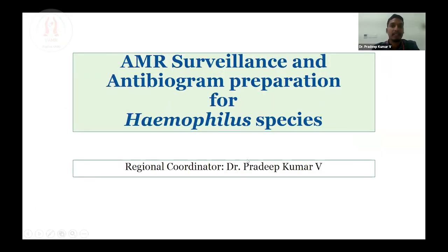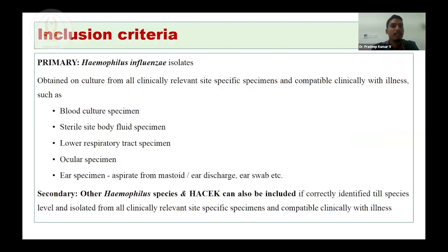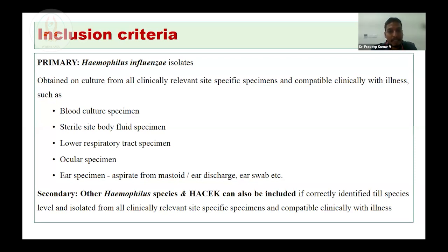For the AMR surveillance of Haemophilus species, the primary inclusion criteria focuses on Haemophilus influenzae isolates obtained on culture from all clinically relevant site-specific specimens: blood culture, sterile site body fluid specimens, lower respiratory tract specimens, ocular specimens, and ear specimens like aspirate from mastoid, ear discharge, ear swab, etc. Secondary inclusion criteria: other species of Haemophilus and HACEK group can also be included provided they are correctly identified to species level and are clinically relevant.